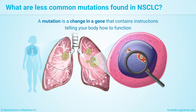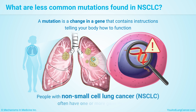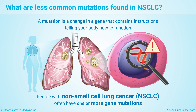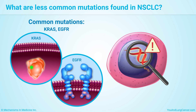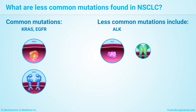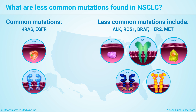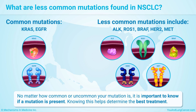A mutation is a change in a gene that contains the instructions telling your body how to function. People with non-small cell lung cancer, or NSCLC, often have one or more gene mutations. Some mutations, like KRAS or EGFR, are relatively common. Less common mutations may also affect people with non-small cell lung cancer — in the United States, several thousand people are found to have these less common mutations each year. No matter how common or uncommon your mutation is, it is important to know if a mutation is present, as knowing this helps determine the best treatment.